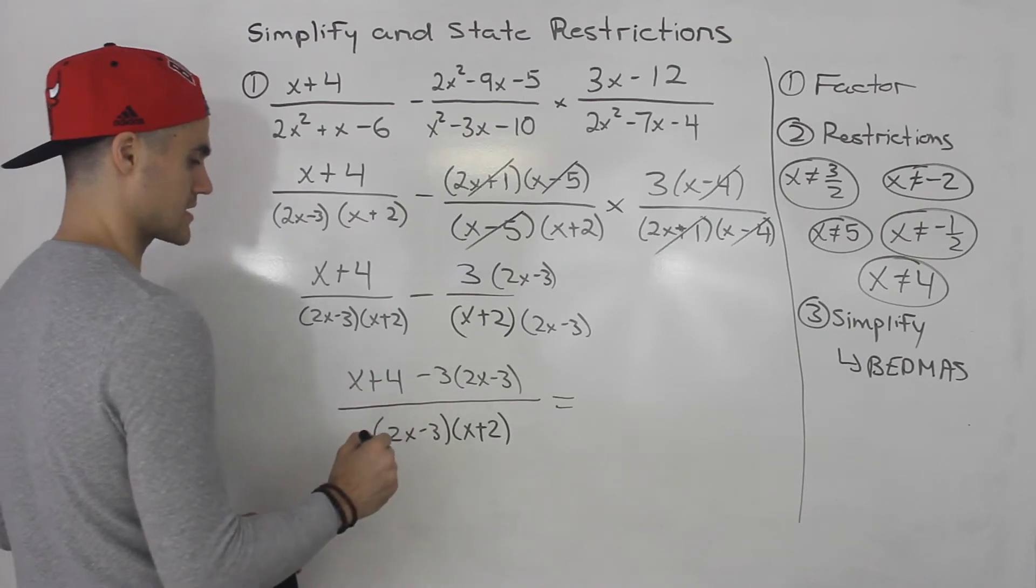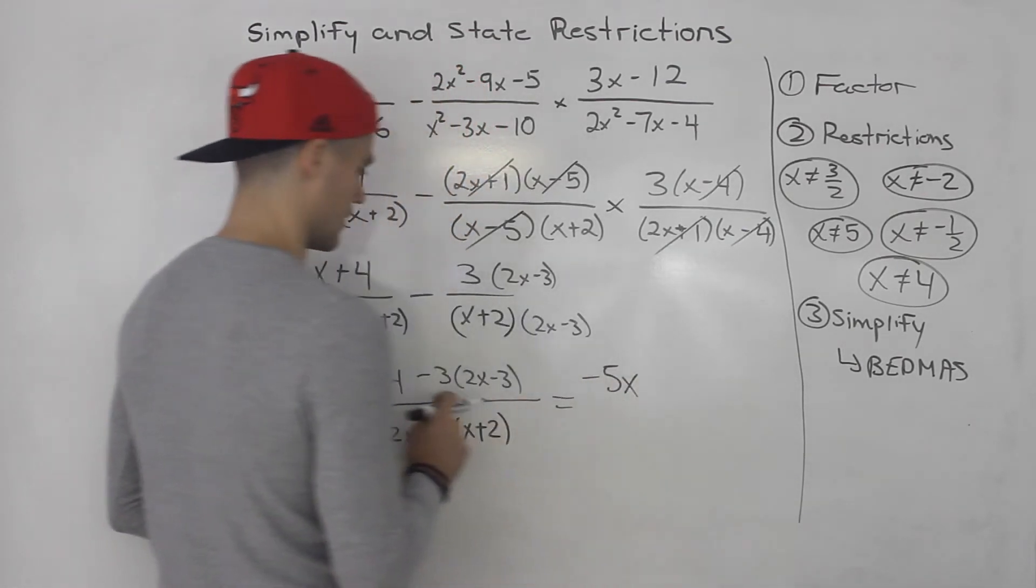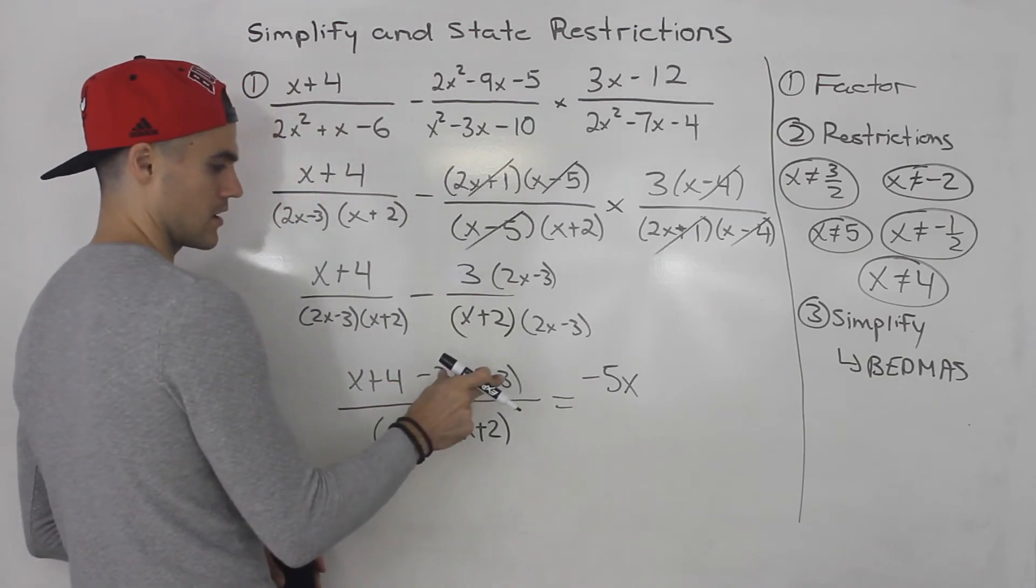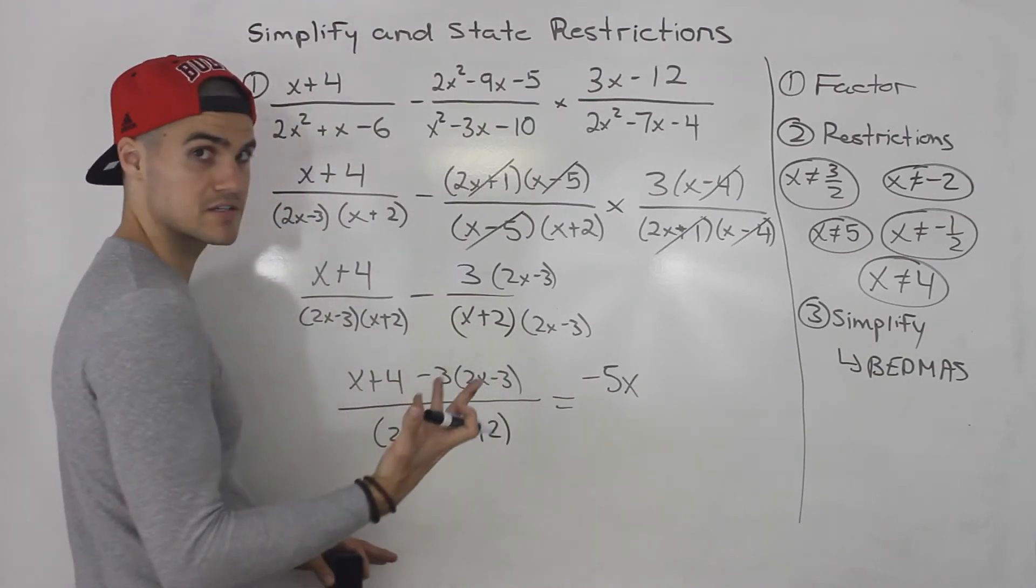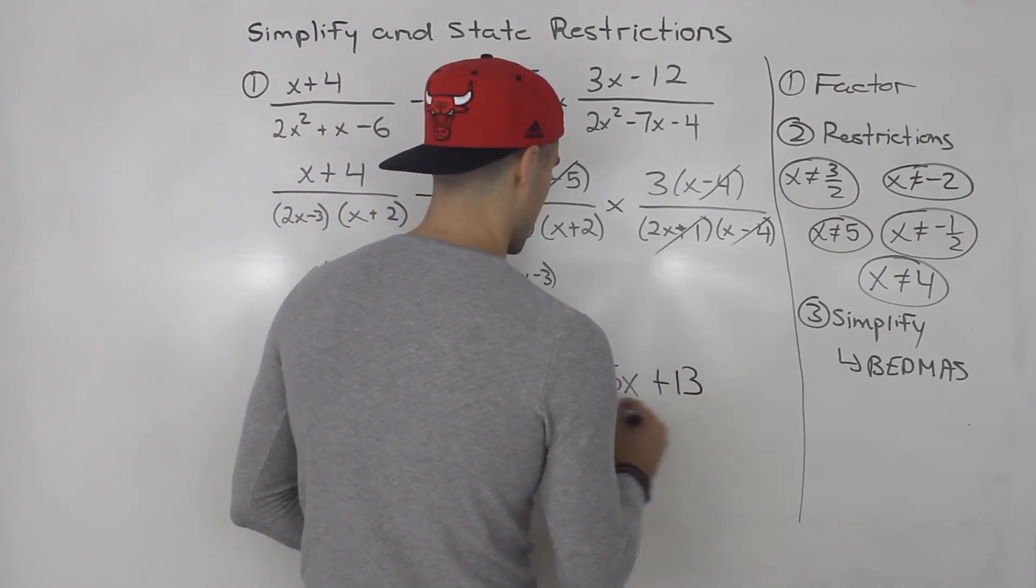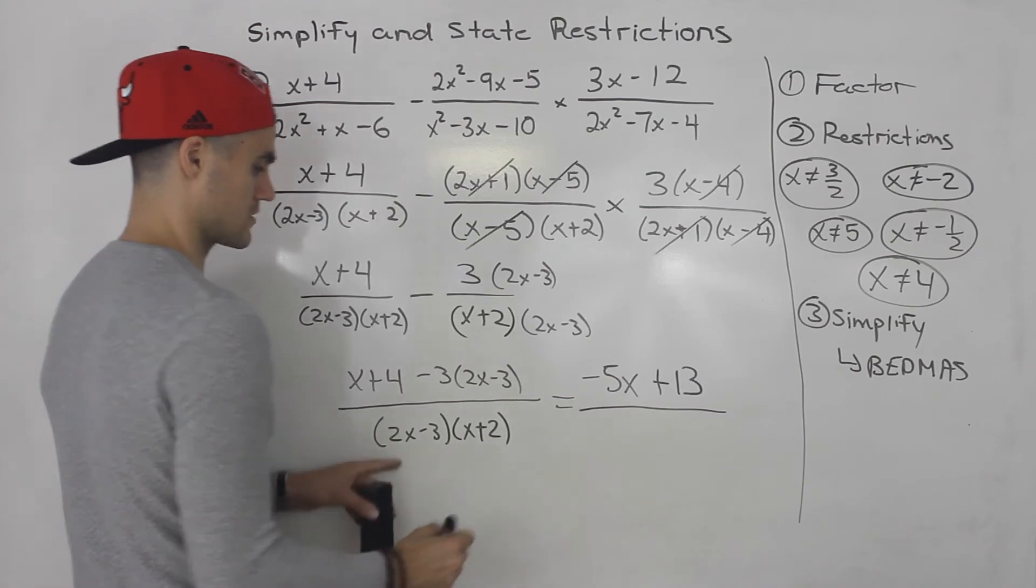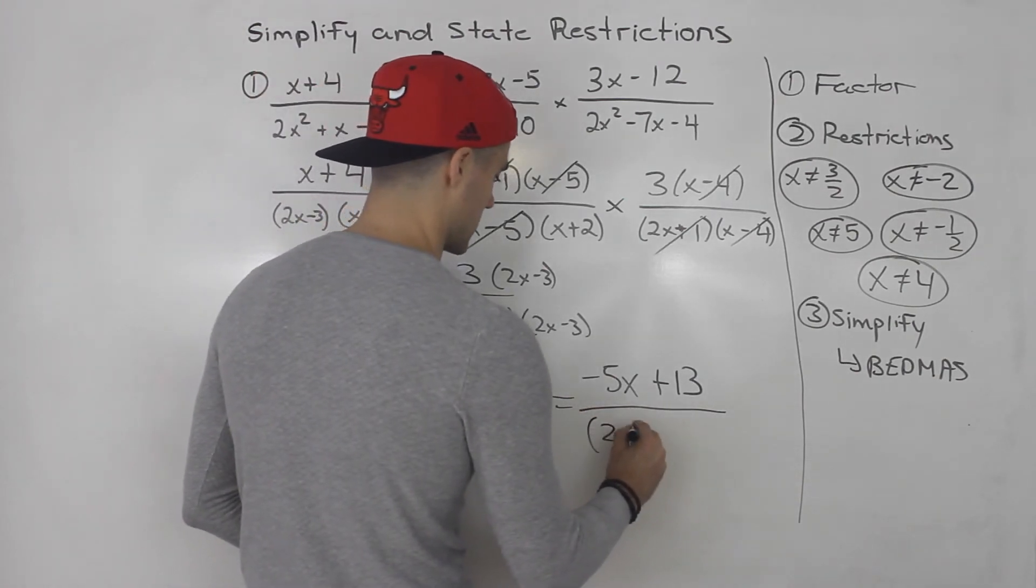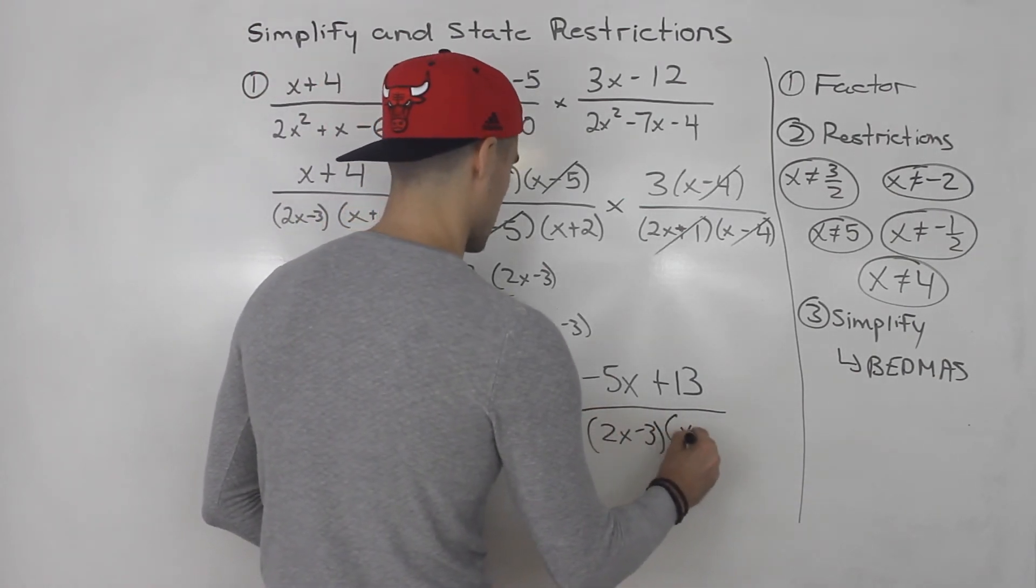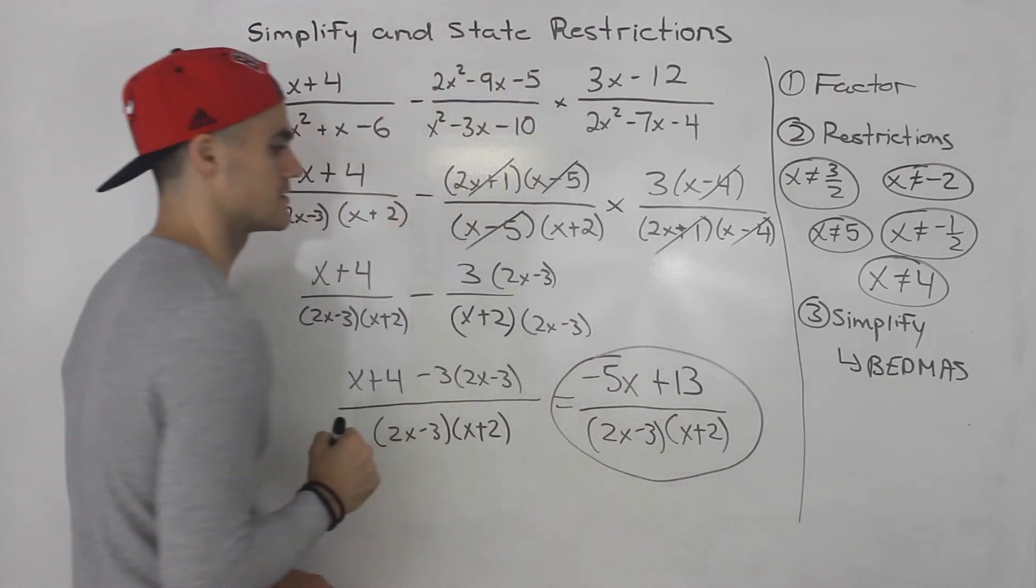x minus 6x, that would give us negative 5x. And then 4, negative 3 times negative 3 is positive 9, so 4 plus 9 gives us 13. That can't really simplify any further. You can't factor that. So 2x minus 3 times x plus 2. That there is the final answer.